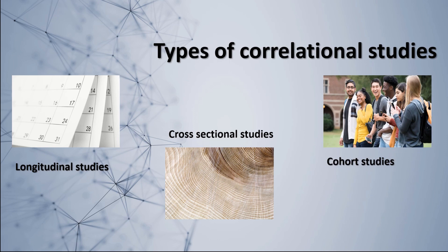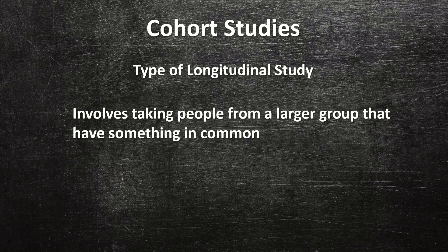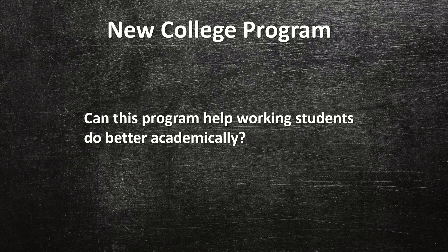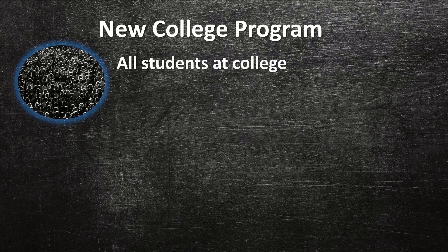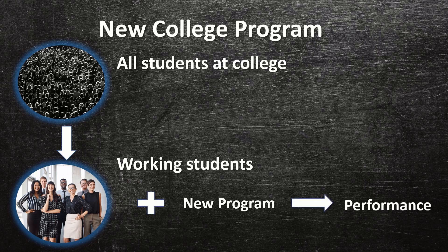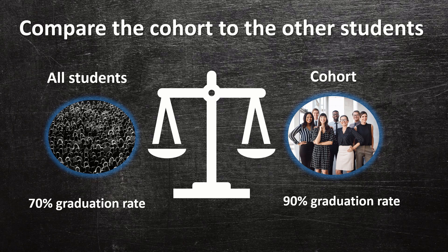The final type is called a cohort study. A cohort study is a longitudinal study, so it usually goes on over a period of time. However, it involves a smaller group of people that have something in common, and you compare that group — the cohort — with the larger population. For example, if a college starts a new program to help working students do better academically, they might take 20 students, follow them over several semesters, and compare their data to college students in general or to working students not in the program. If those students had better grades or graduated more often, then maybe the new program is helpful. These types of studies are used a lot to see how effective new treatments and therapies can be.